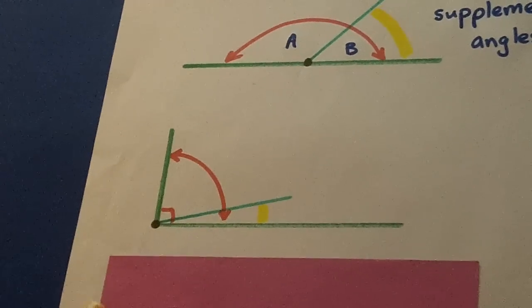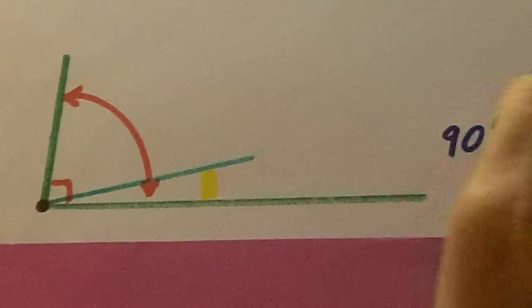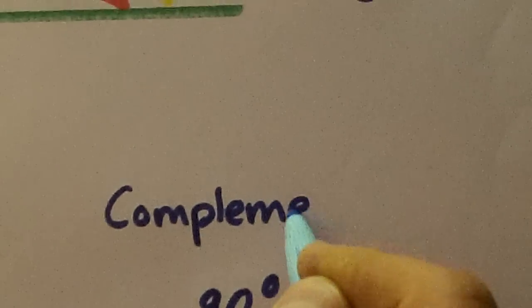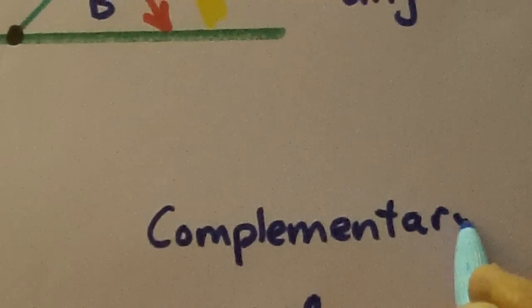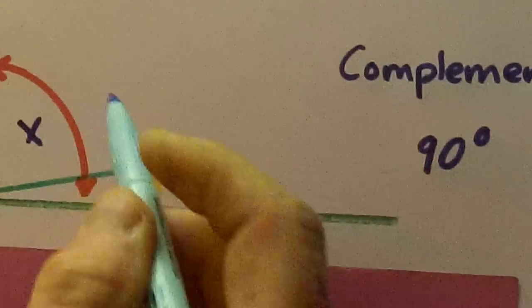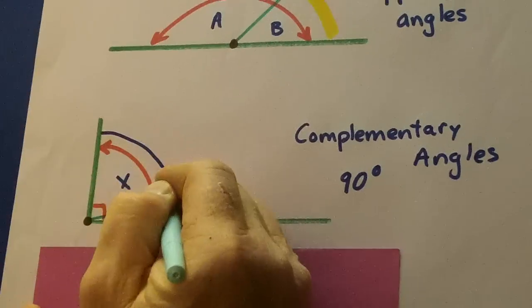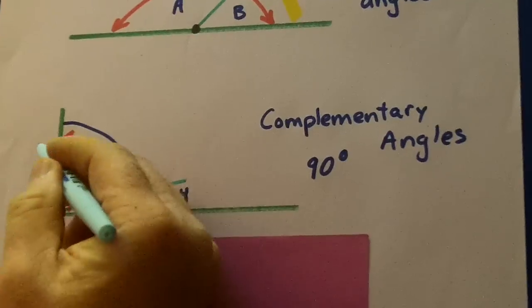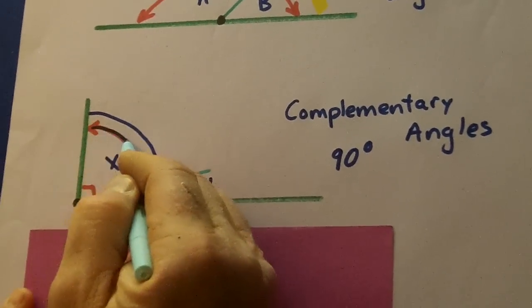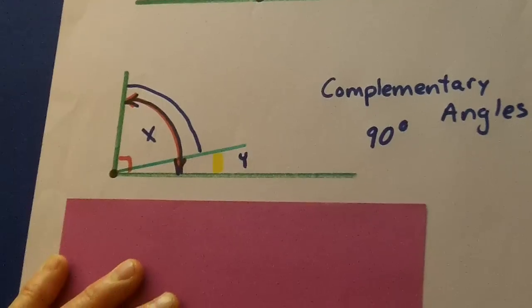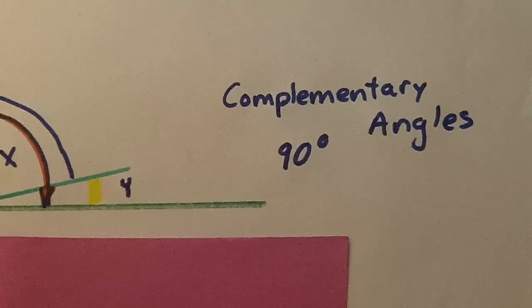Now, the type of angles that equal 90 degrees are called complementary. Complementary angles equal 90 degrees. So let's say this is X from here to here, and then this yellow is Y. If we add both of those we get what's in red here. That's 90 degrees, and we call those complementary angles.